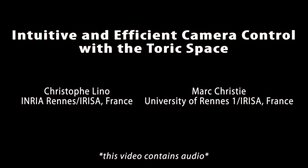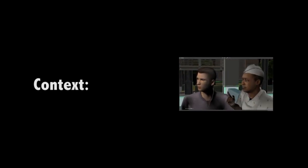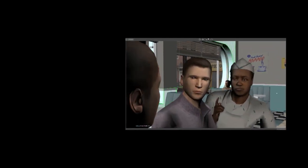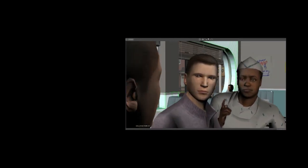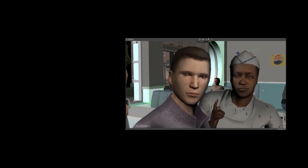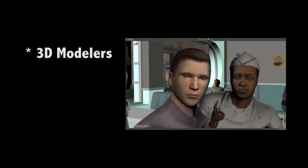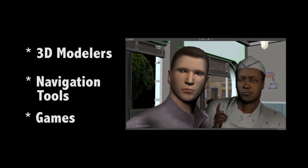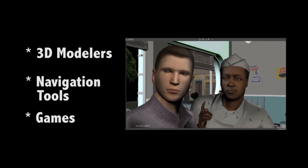This work presents the Toric Space, a novel and compact representation that helps to address a number of challenges in virtual camera control. Virtual camera control is the task of positioning and moving cameras in virtual 3D environments. Many applications in computer graphics such as 3D modelers, navigation tools, or games rely on camera control techniques.